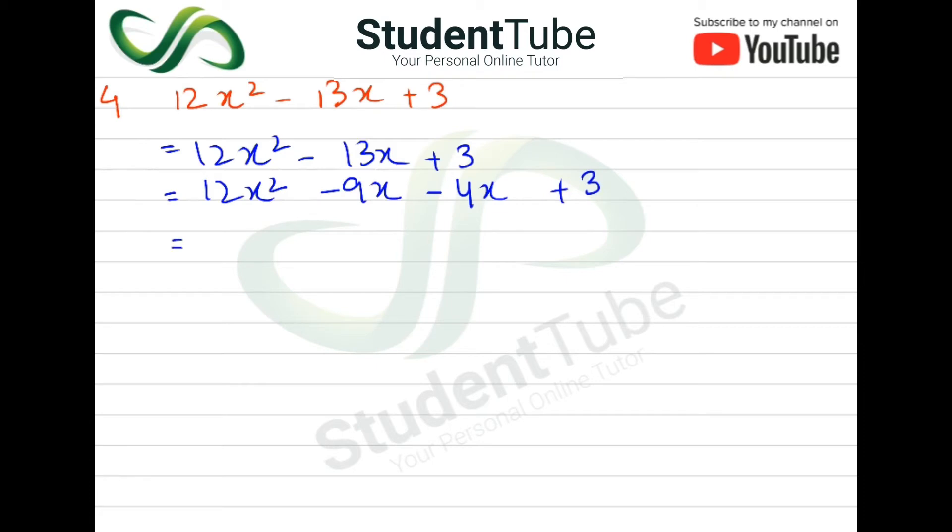Now we will take common here. 3x, when we take common here, then we will come in the bracket 4x. 12 and 3, 12x² is x², so 12 divided by 3 is 4, because 9 divided by 3 is 3.